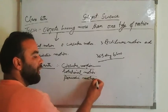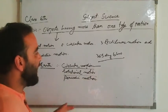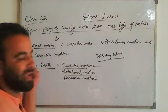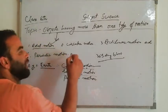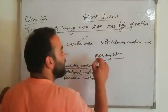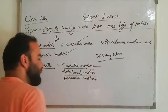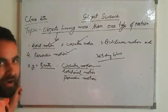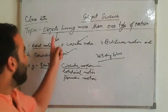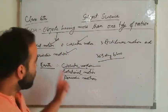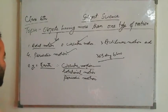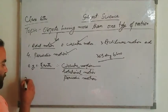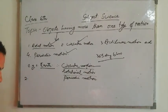So the Earth has shown rotational motion, circular motion, and periodic motion. This object has more than one type of motion.